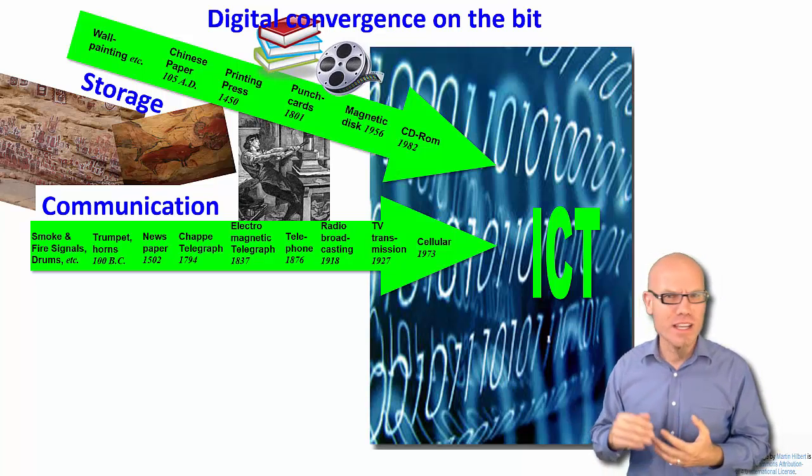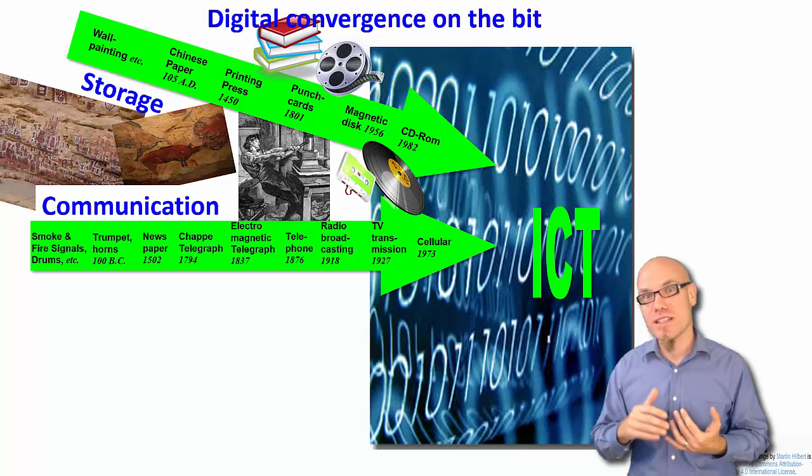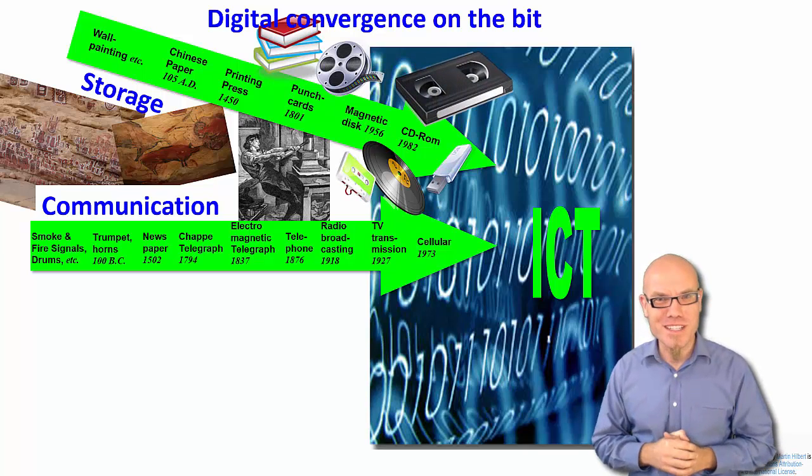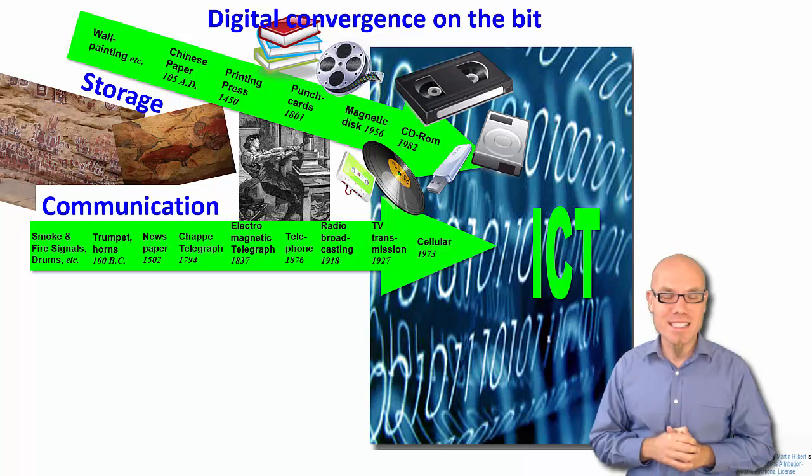Then Gutenberg famously invented his printing press, books, magnetic tapes, vinyl records, audio cassettes, and more recently, hard disks and memory sticks and all kinds of memory devices.